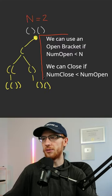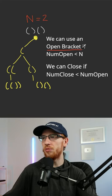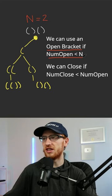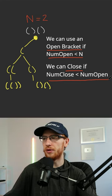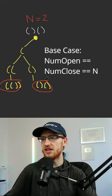Now it's a little hard to come to this conclusion, but we can use an open bracket if numopen is less than n, and we can use a closing bracket if numclose is less than numopen. And we know we've reached a base case if both numopen and numclose are equal to n.